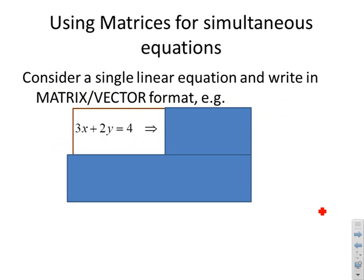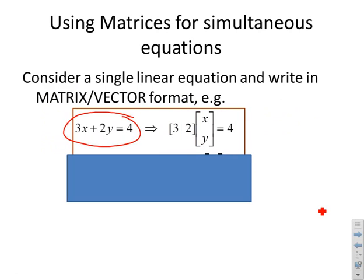Let's take a simple linear equation: 3x plus 2y equals 4. I can express this in matrix vector format using one matrix for the coefficients (the 3 and the 2), a vector for the unknowns x and y, and the 4 on the other side. I've got a row vector 3 and 2 with the coefficients, a column vector x and y with the unknown variables, and equals 4.